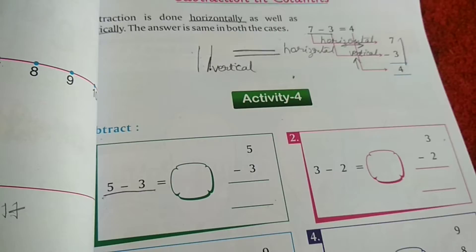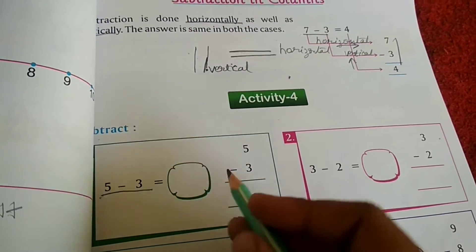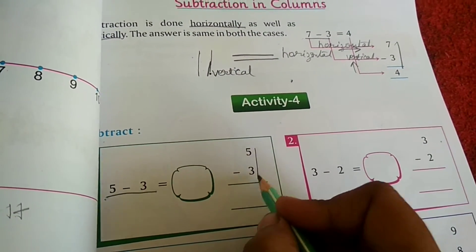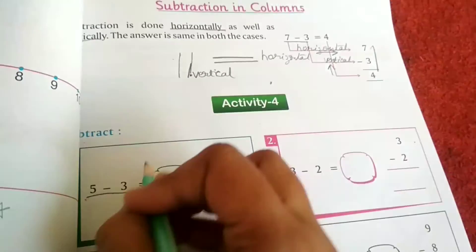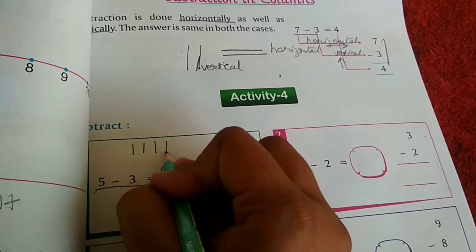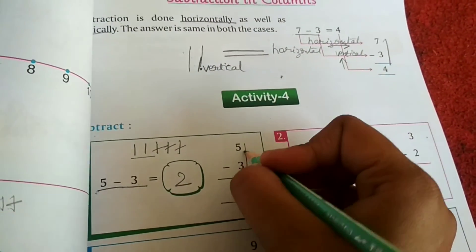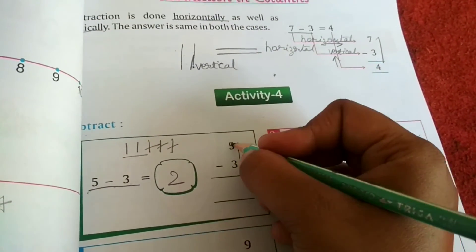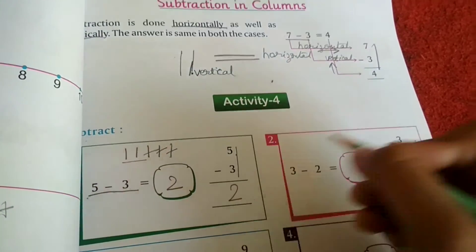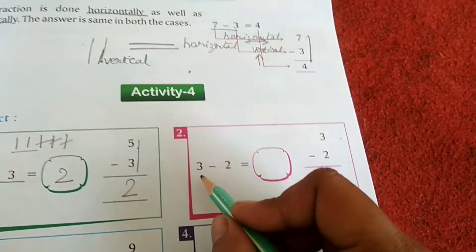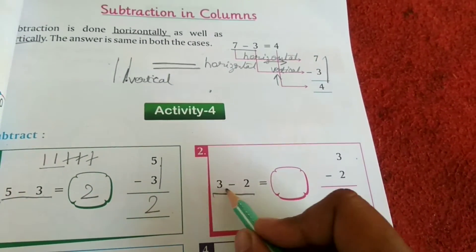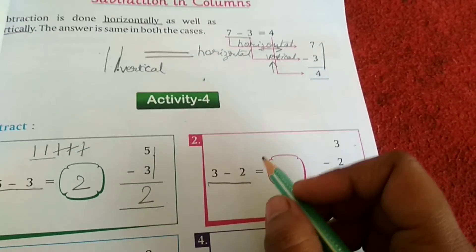This is a horizontal line and this is a vertical line. 5 minus 3. 1, 2, 3, 4, 5 minus 1, 2, 3. Left is 2. Right? This is which line? Horizontal. Yes.